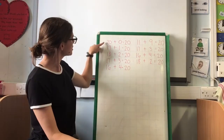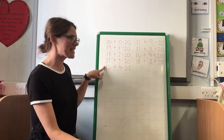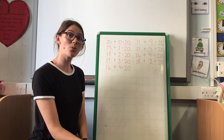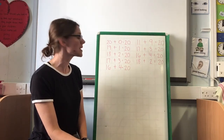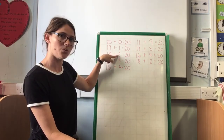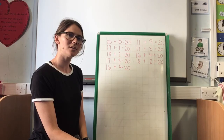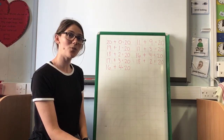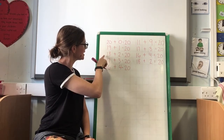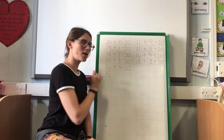Now let's have a look at these numbers. What is happening to those numbers? 20, 19, 18, 17, 16 — what's happening? We're counting backwards. Yes, we are counting backwards. So I can carry on counting backwards in this column: 20, 19, 18, 17, 16, 15. What comes next? 14.